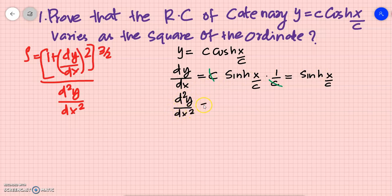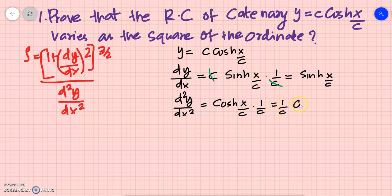Now for d²y/dx², the derivative of sinh(x/c) gives cosh(x/c) into 1/c. So d²y/dx² = (1/c)·cosh(x/c).